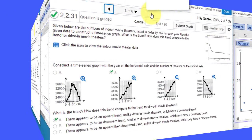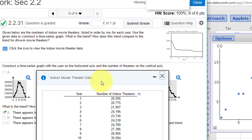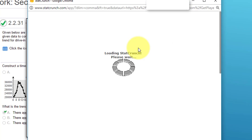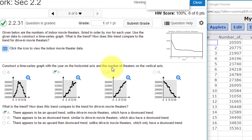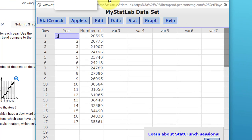Let's go to the last problem. It says data on indoor movie theaters listed by row for each year. Use the data to construct a time series graph. What is the trend? We're going to click on this icon, which will open the table. Then there's our icon to copy to StatCrunch. We've got our data in here. I'm going to close this table so we've got the ones we want to compare. We want a time series graph.